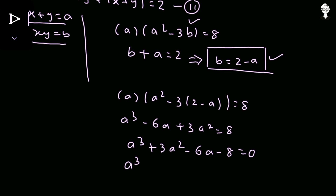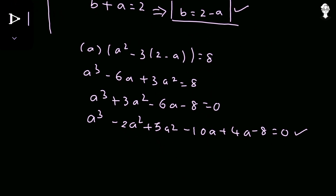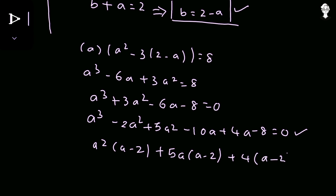We solve this cubic using factorization. We split 3a² as −2a² + 5a² and −6a as −10a + 4a, keeping −8 as is. Grouping: from a³ − 2a², take out a² giving a²(a − 2); from 5a² − 10a, take out 5a giving 5a(a − 2); from 4a − 8, take out 4 giving 4(a − 2).